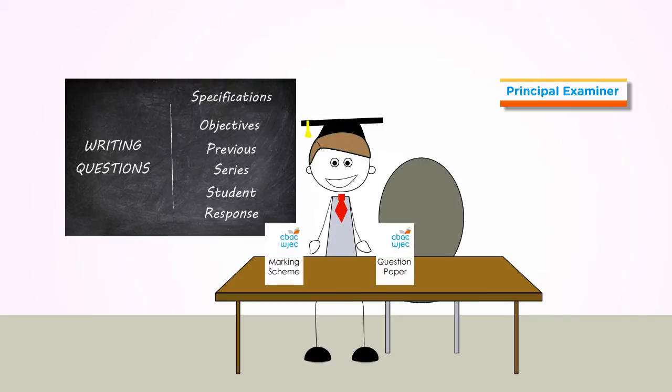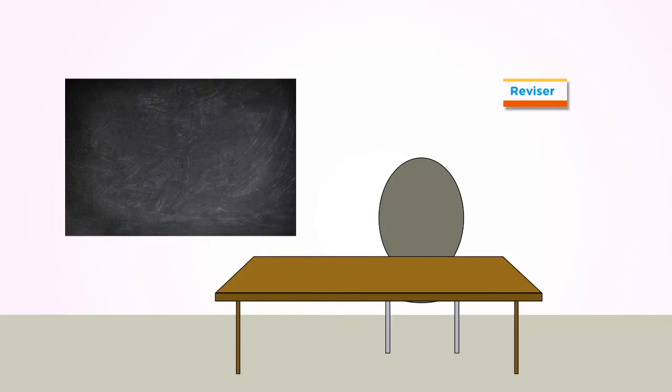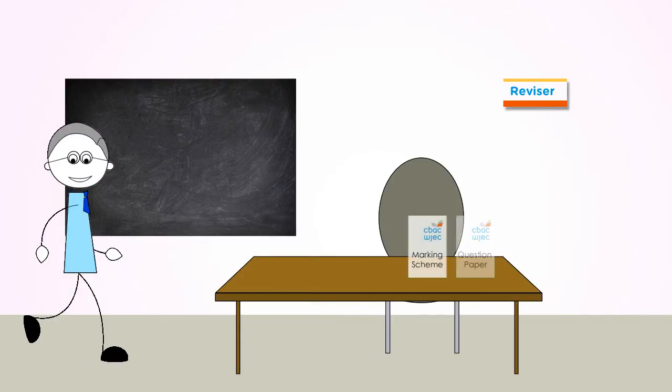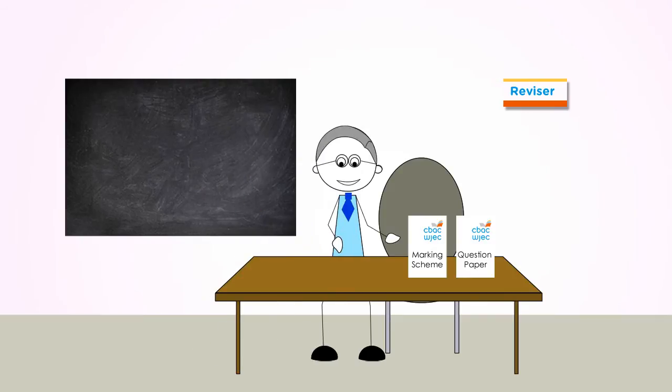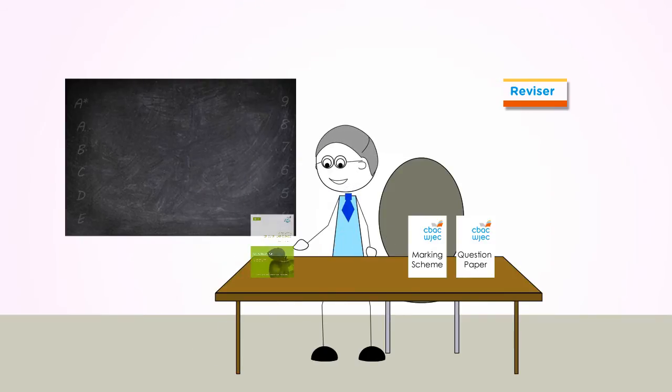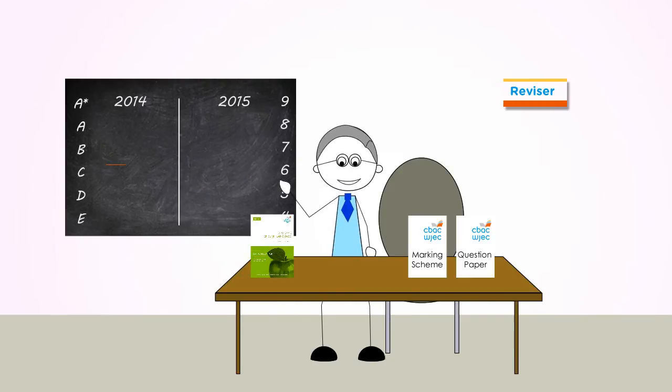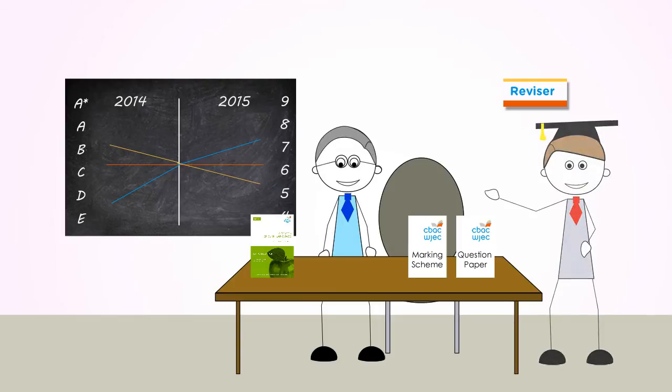When the principal examiner has drafted the question paper and mark scheme, it is then reviewed by the reviser. The reviser considers the questions and mark schemes carefully with reference to the specification, ensuring that they are of comparable demand to previous series and that there are no errors or omissions. The reviser may recommend changes to the question paper and mark scheme which will be carried out by the principal examiner.